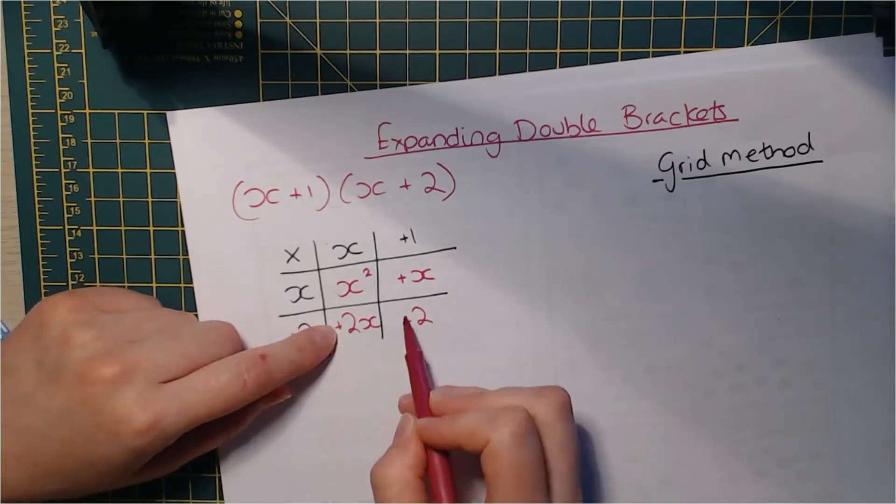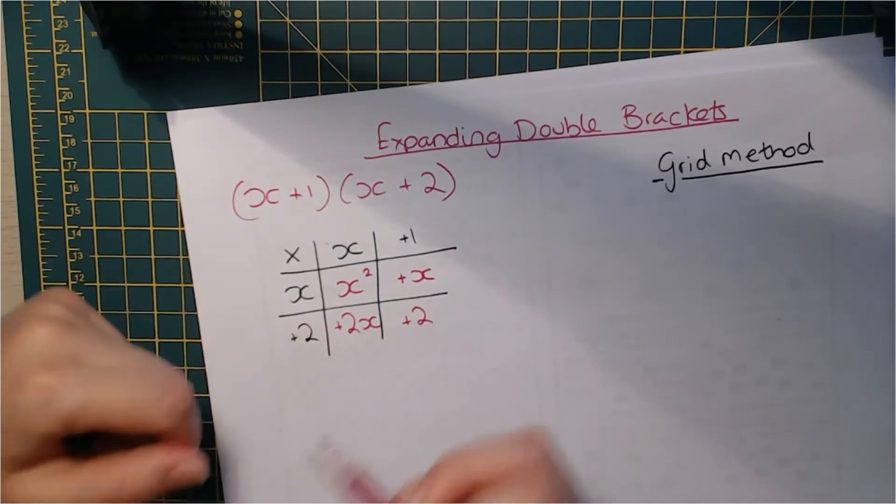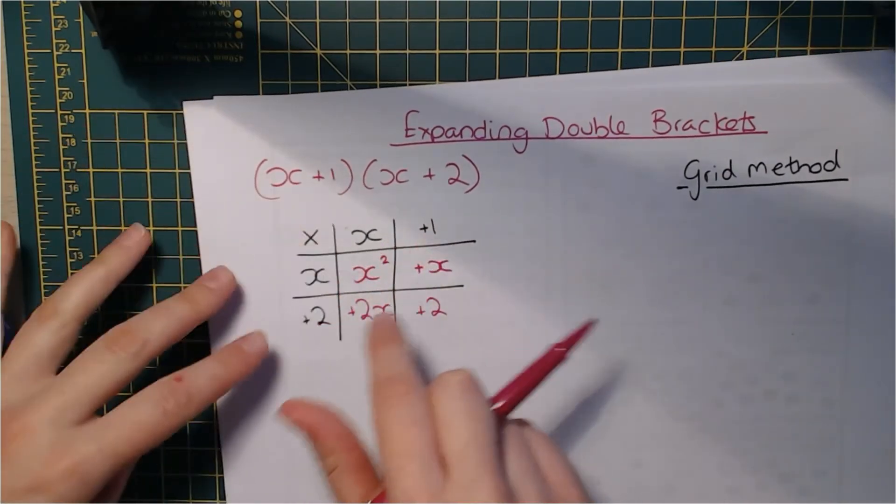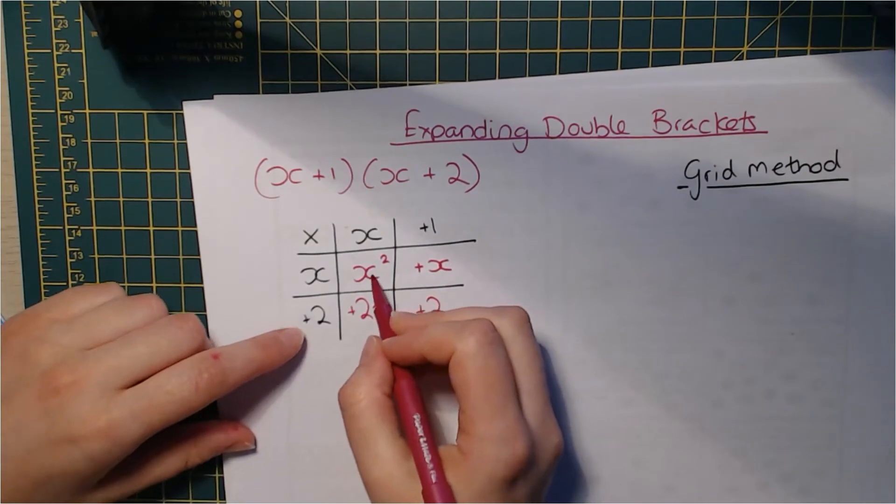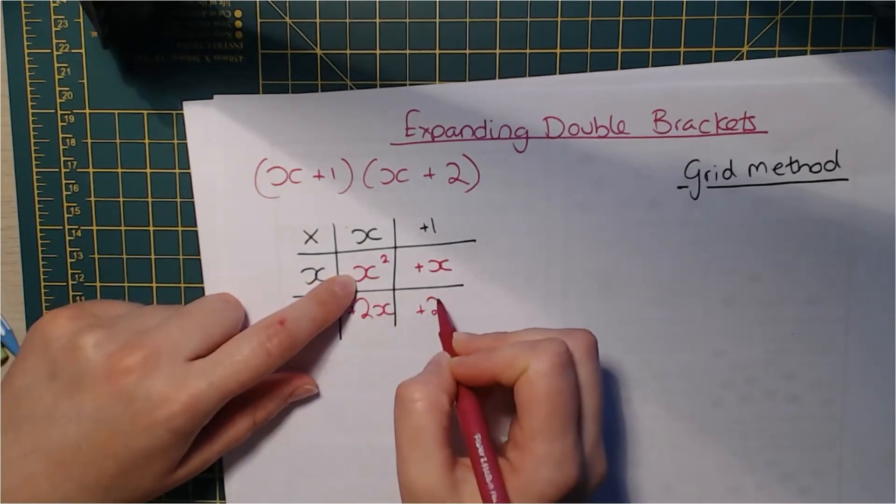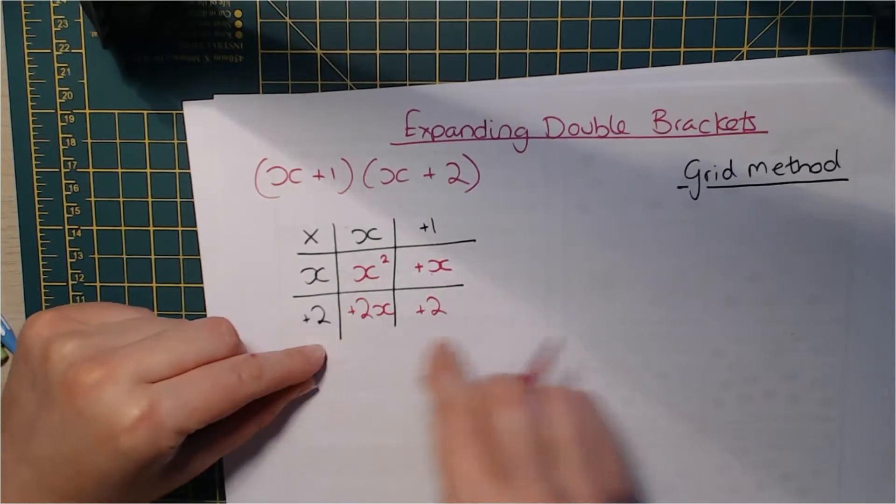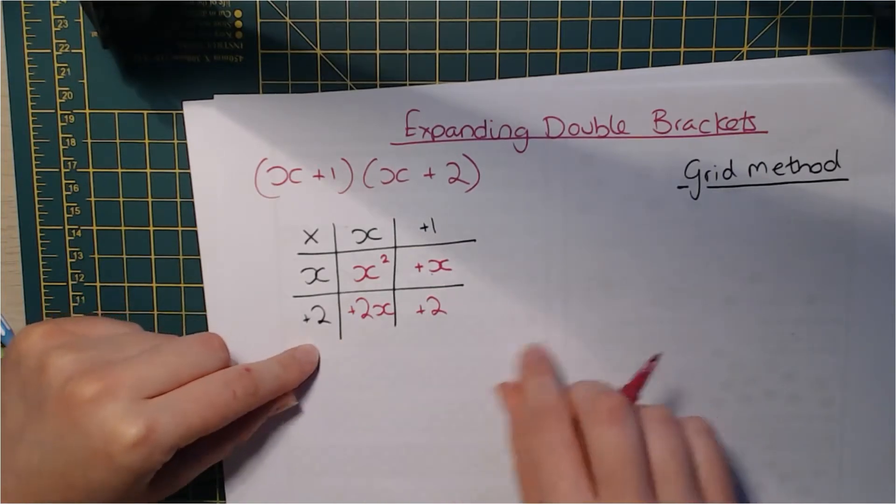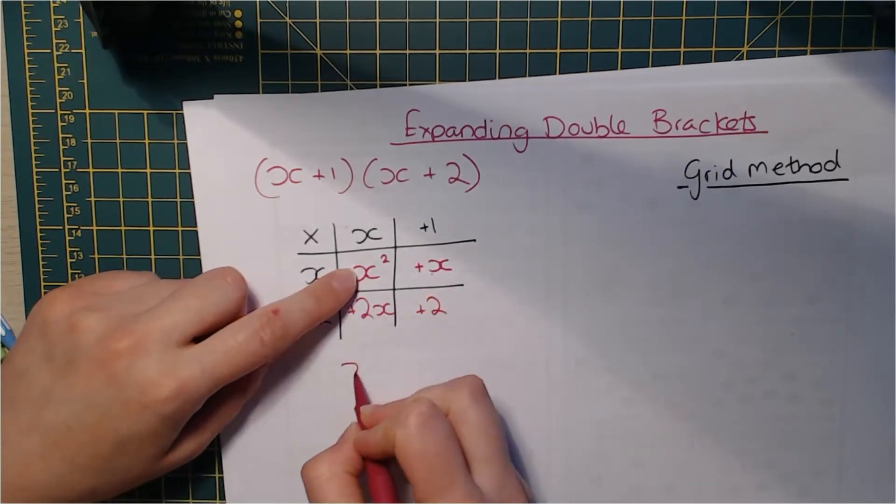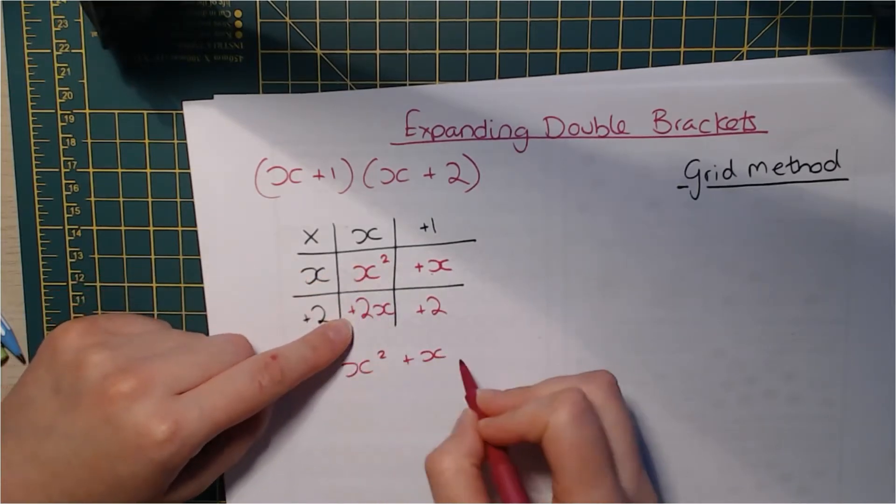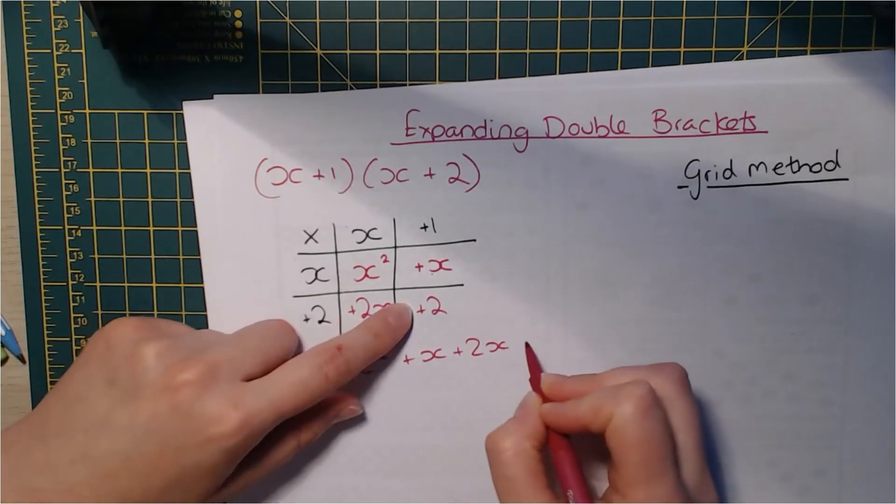Now, I'm putting these signs in because it makes the next step a lot easier if they're already there. Makes everything much easier, especially once you get onto negatives and things. So now I've done this, my bit inside, I've used a different color. You can do the same because now I know everything in this different color is going to make my expression down here.